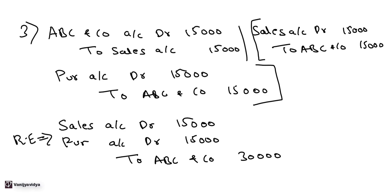We have taken out Rs. 15,000 from sales and added Rs. 15,000 to purchases. ABC account was wrongly debited by Rs. 15,000, so we reversed that impact, and since there are purchases from ABC we credit them by Rs. 15,000 — making the total credit impact on ABC account Rs. 30,000.